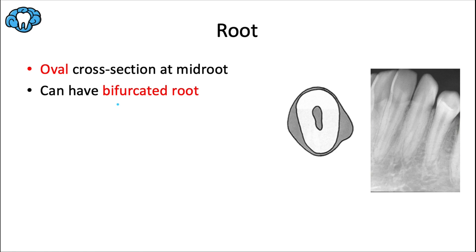This is the only anterior tooth that might legitimately have a bifurcated root — you can see that on x-ray where the root literally splits into a facial and lingual root. It also has the longest root of any mandibular tooth; both canines have the longest roots in their respective arches.